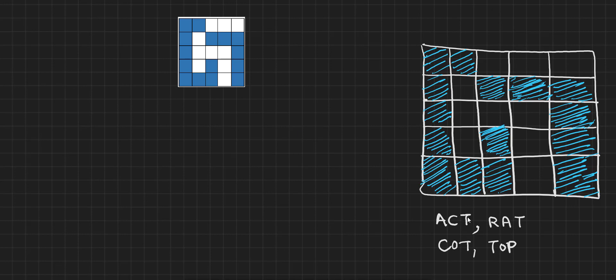There is a grid and a list of words that we want to fit into it. We can think about this problem in two directions. The first direction is to visualize it as filling n words in the grid, because the number of words tells us how much work we need to do. We define the problem size as: fill n words in grid.